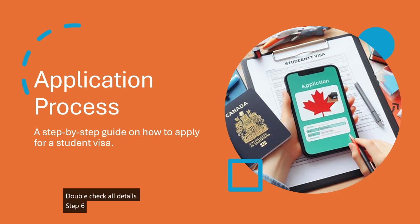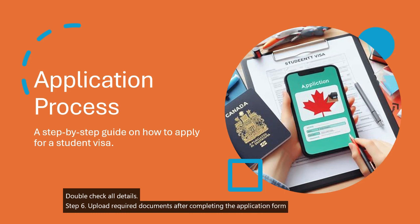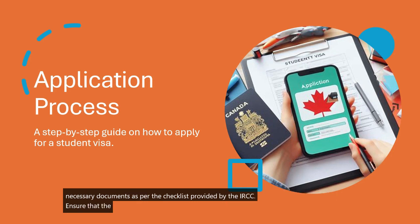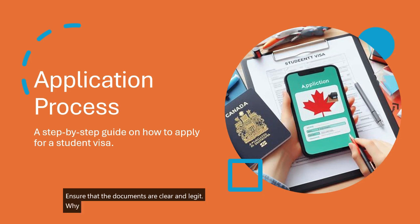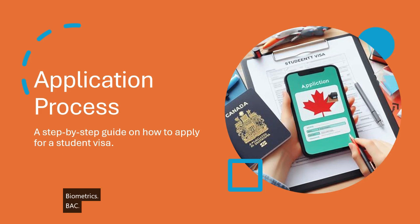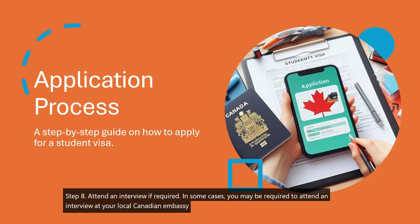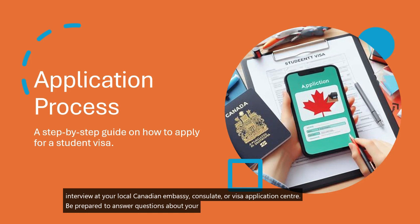Step 6 — Upload Required Documents: after completing the application form, upload all the necessary documents as per the checklist provided by the IRCC. Ensure that the documents are clear and legible. Step 7 — Biometrics Appointment (if required): if requested, schedule and attend a biometrics appointment at a local Application Support Centre (ASC) or Visa Application Centre (VAC). Biometrics include fingerprinting and a photograph. Step 8 — Attend an Interview (if required): in some cases, you may be required to attend an interview at your local Canadian embassy, consulate, or visa application centre. Be prepared to answer questions about your study plans and financial situation.